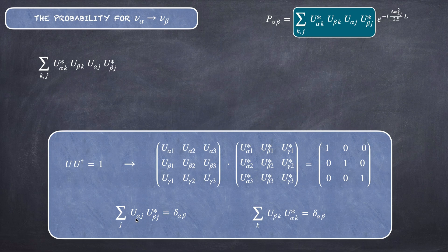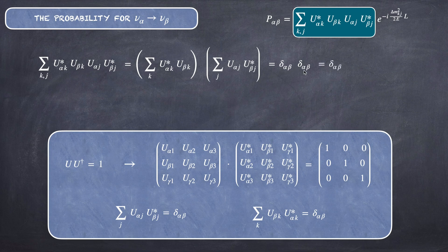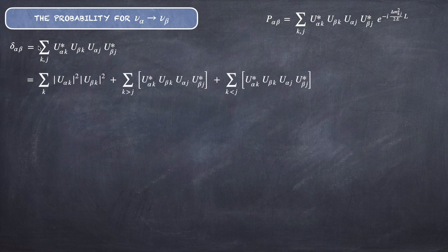Interchanging the indices, we also get the relation with α and β swapped, both equal to the Kronecker delta δ_αβ. We can then write δ_αβ as the product of two separate summations — one over K and one over J — each yielding a delta, so their product also equals δ_αβ.